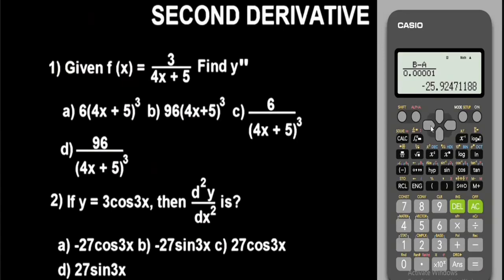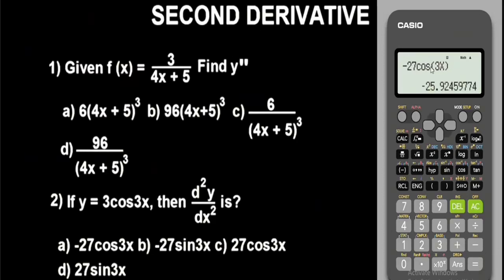Now input alpha B minus alpha A, all over the constant 0.00001. Press equals — we get minus 25.92. We will now simplify the options; whichever gives minus 25.92 is the answer. Let's check option A: minus 27 cos(3x). Press equals — we get minus 25.92 exactly. So the correct option is option A.